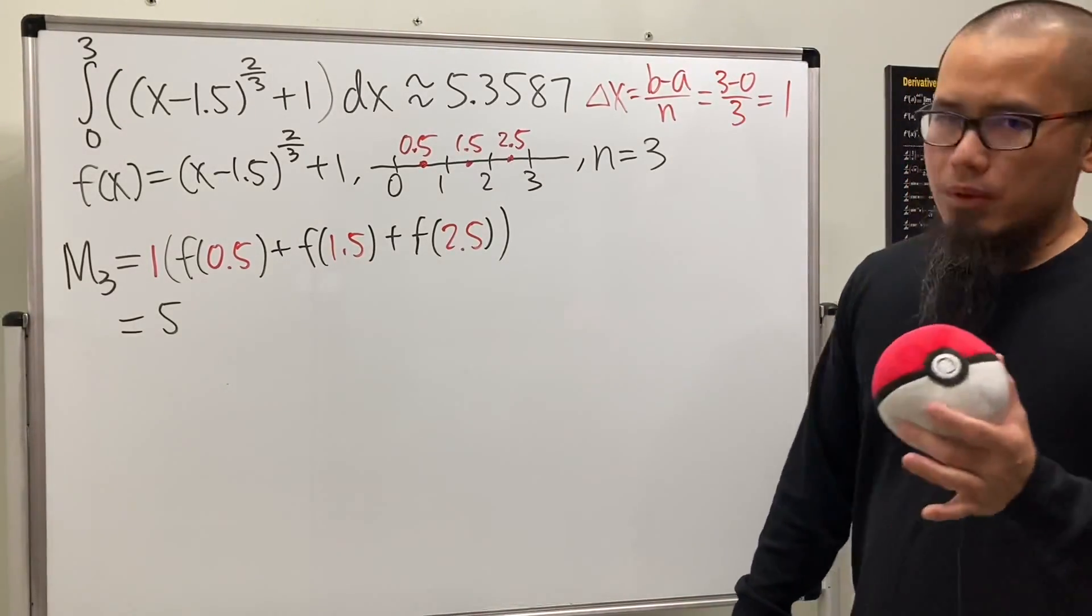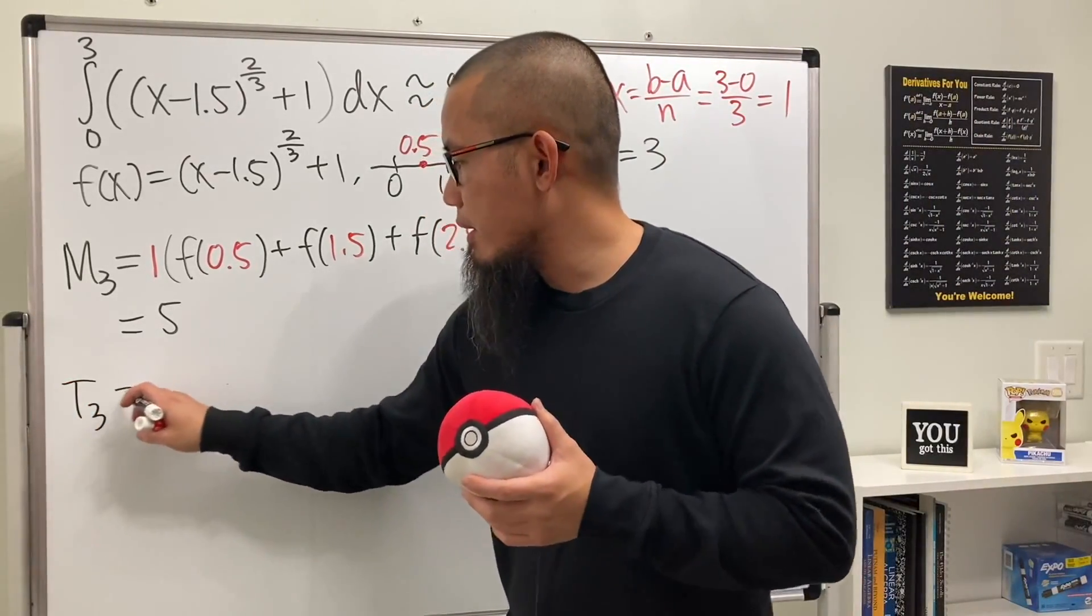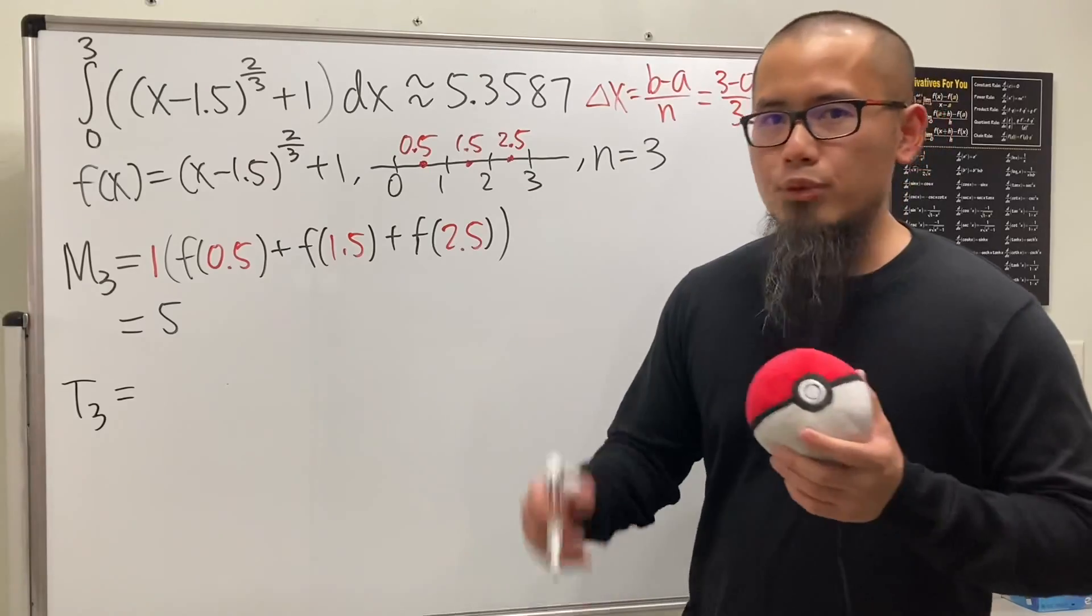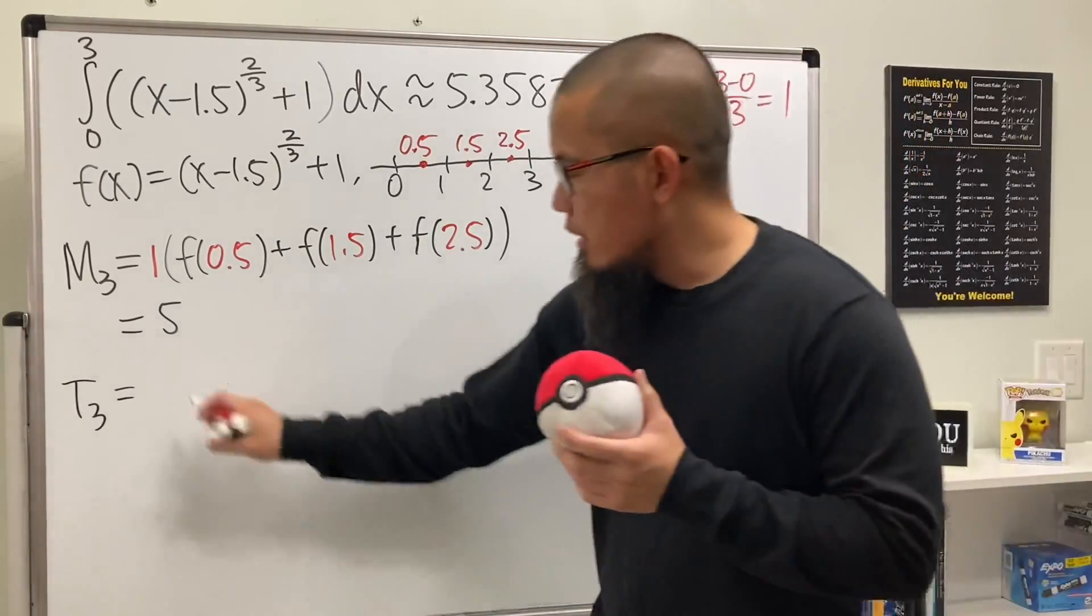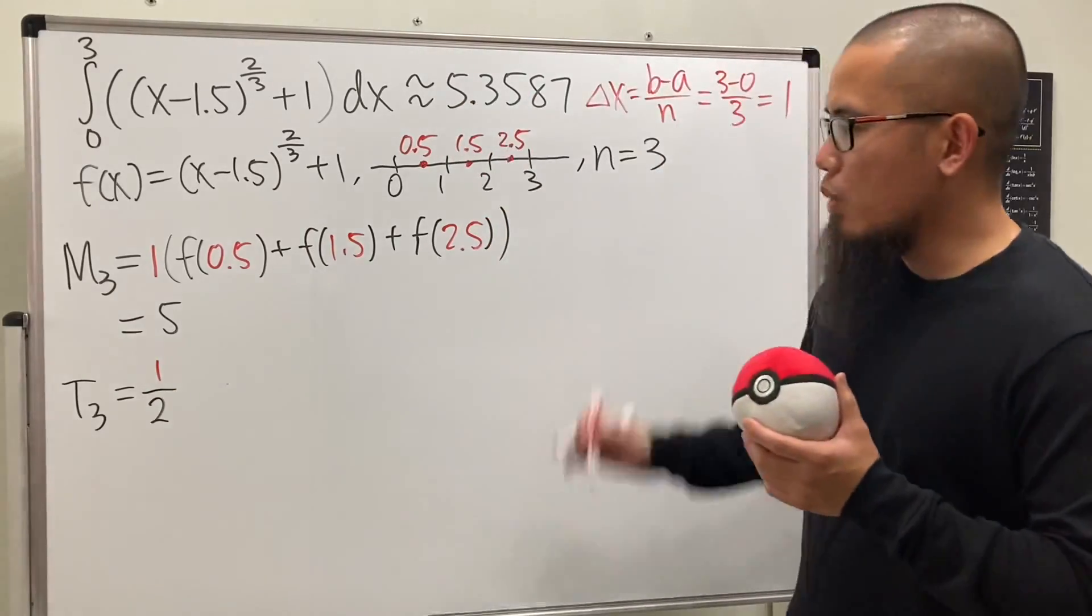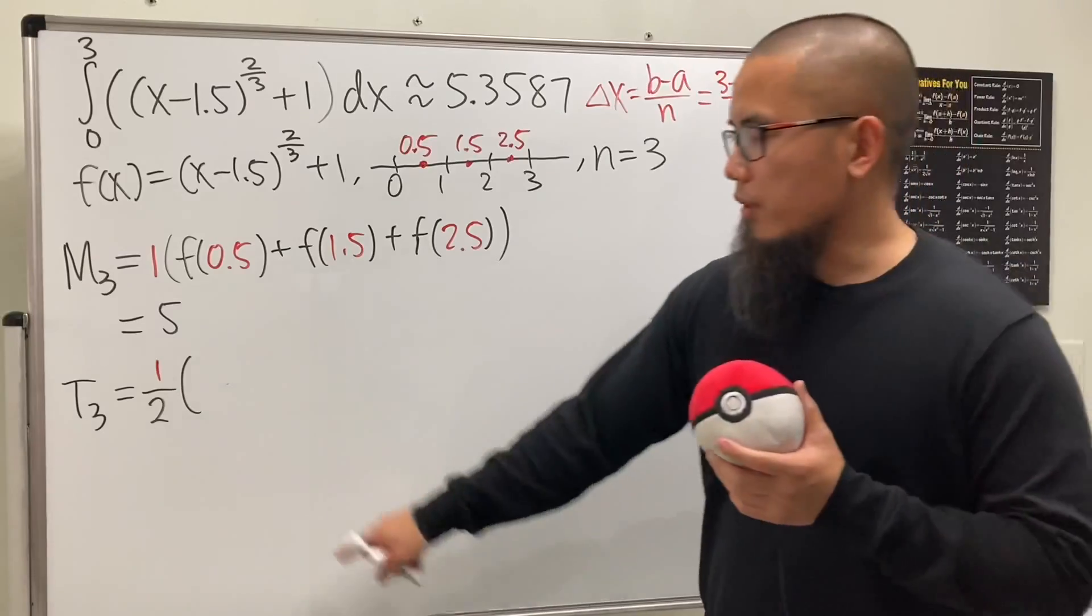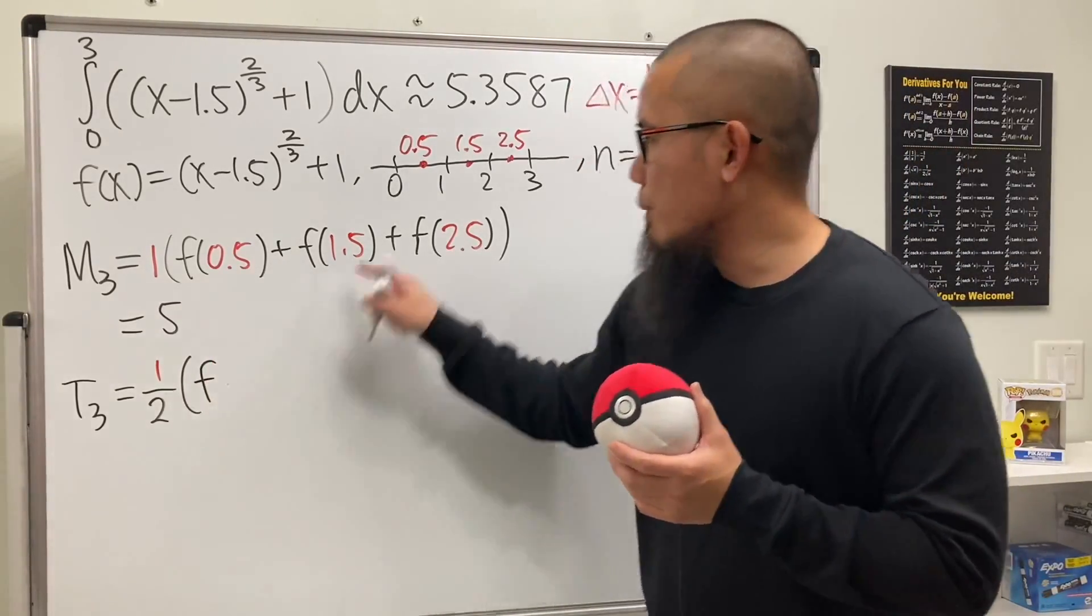Now let's do the trapezoidal rule when n equals 3. First, we will have delta x divided by 2, so it will be 1 over 2 because delta x equals 1.